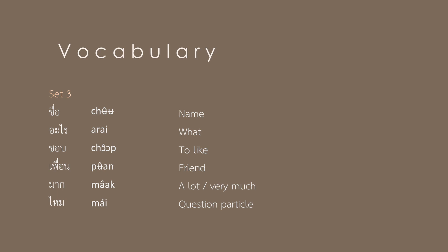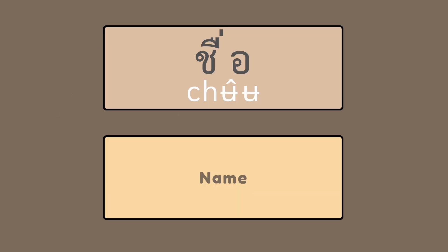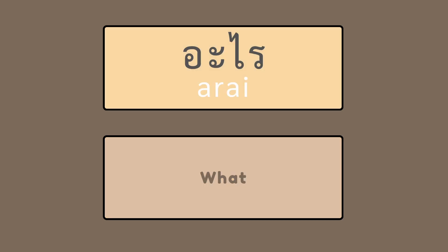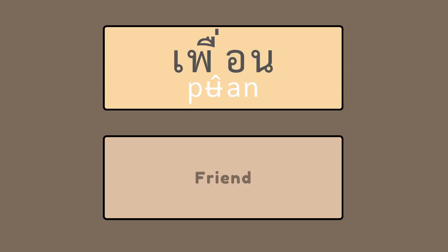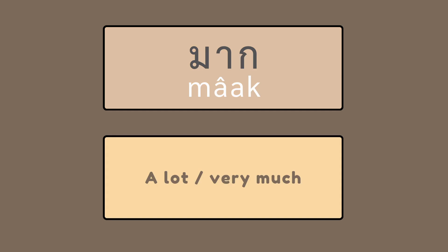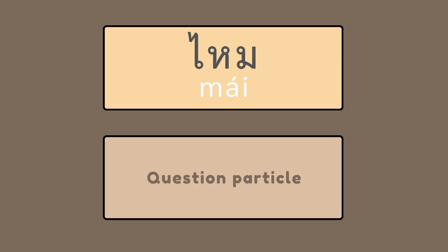Now it's your turn. First, listen and then repeat. ชื่อ — name. Now repeat: ชื่อ. เพื่อน — friend. มาก — a lot, very much. Now repeat: มาก. ไหม — question particle. Now repeat: ไหม.